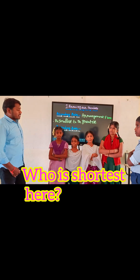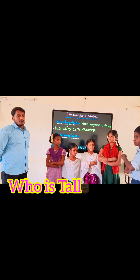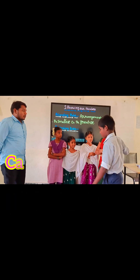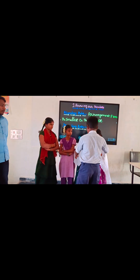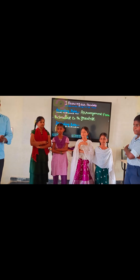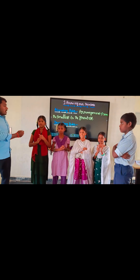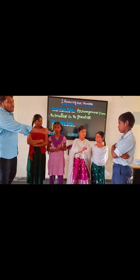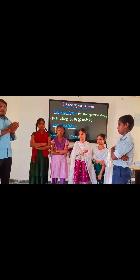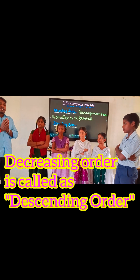Who is shortest here? Who is tallest here? Can you arrange them in descending order — heights in decreasing order? She arranged four members and she is the tallest among the four. We arrange them in decreasing order of their heights.